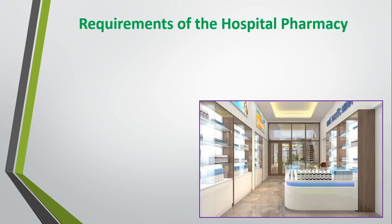Let's see the requirements of the hospital pharmacy. You can see in this picture a pharmacy where medicines are kept in racks. So here is a requirement for racks used for keeping medicines, as well as a counter, which is also a requirement for the hospital pharmacy. So many requirements for the hospital pharmacy are specified under the Drug and Cosmetic Act 1945, according to Schedule M and Schedule N. We will see the floor space as well as personnel requirements to run the hospital pharmacy smoothly.